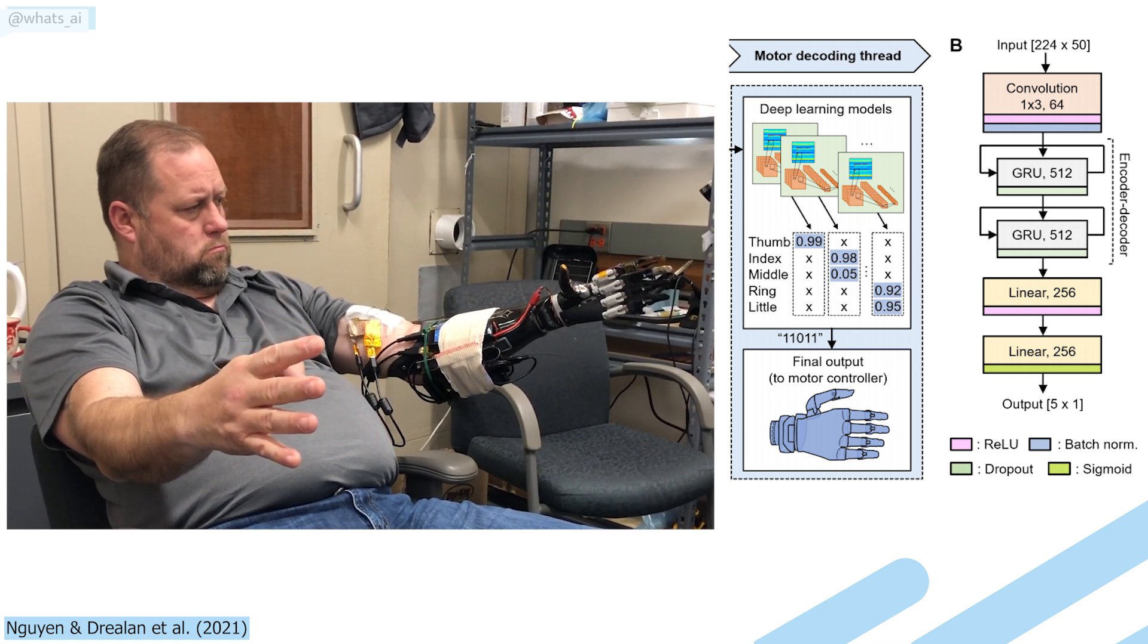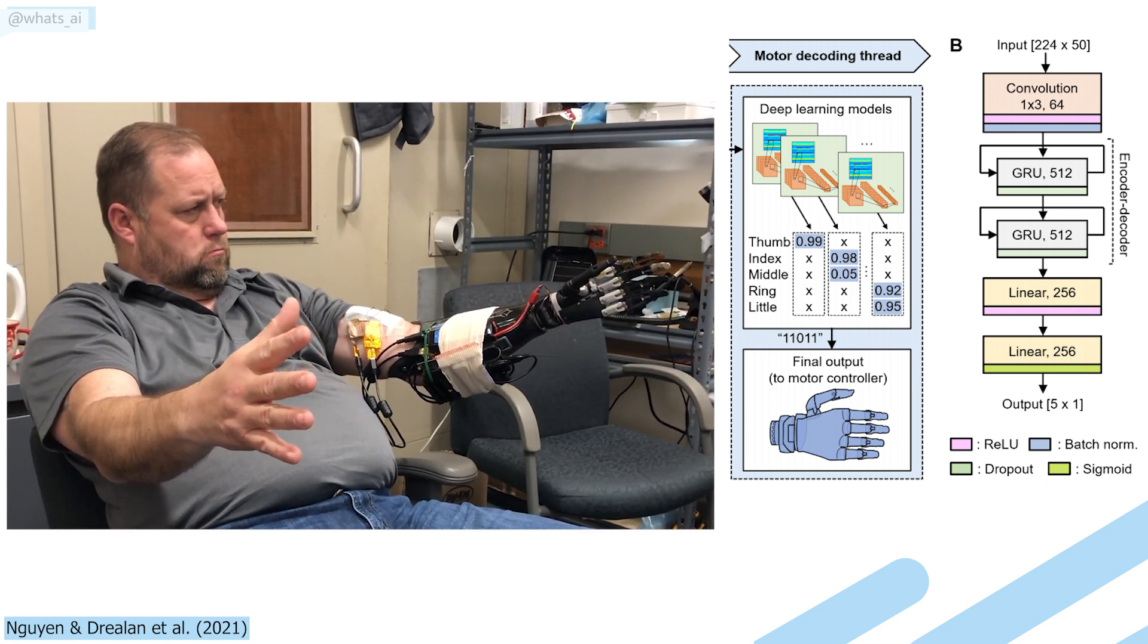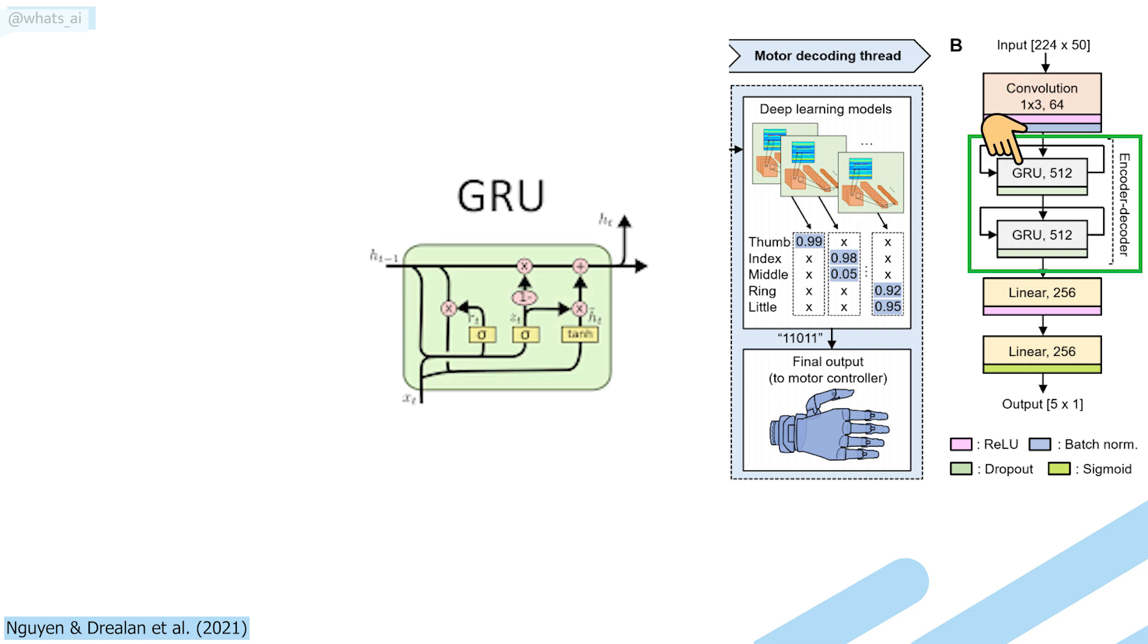Then, we know that time is very important in this case, since we want fluid movements of the fingers. So they opt for Gated Recurrent Units, or GRU, to represent this time dependency aspect when decoding the data.